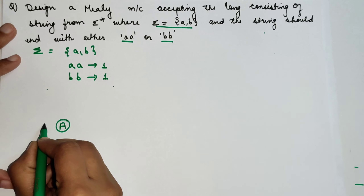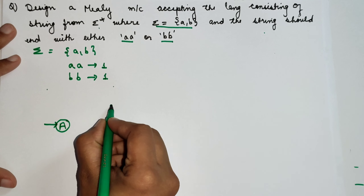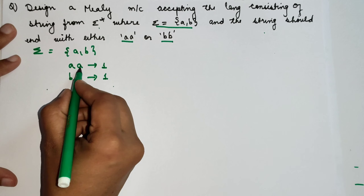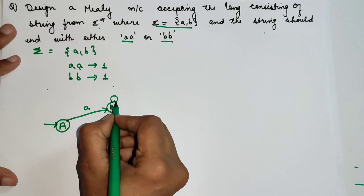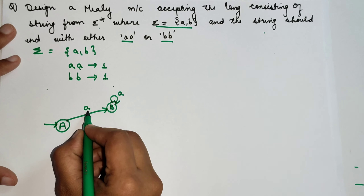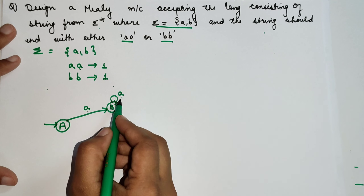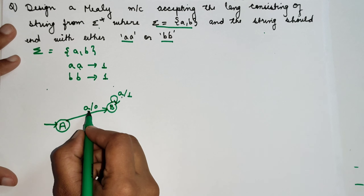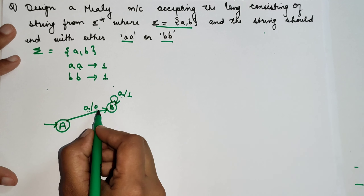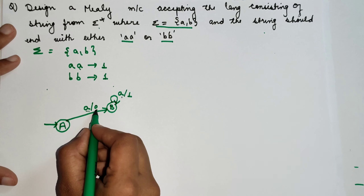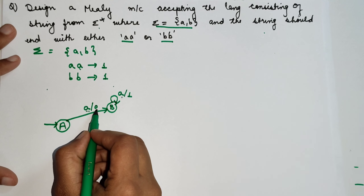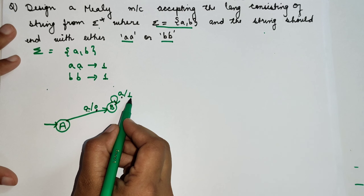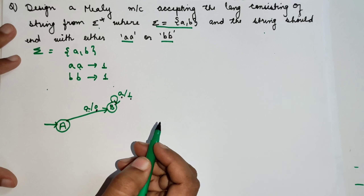First of all, I will draw the initial state A. I will mark one more state B and take input A. After A, we want one more A. So I have taken the self-loop on A so that whenever A is there and if we get another A, the output produced should be 1. But here the output produces 0 because there is a single A. In the Mealy machine, we write down the input as well as the output. After this A, if we see one more A, then it should produce an output of 1.